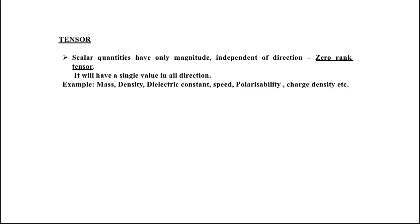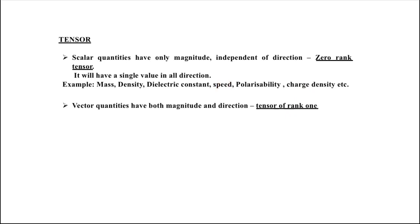A zero-rank tensor expresses a scalar quantity. Examples of scalar quantities include: mass, density, dielectric constant, speed, polarizability, charge density, etc. Here, note the difference between speed and velocity. What about the second type of physical quantity?